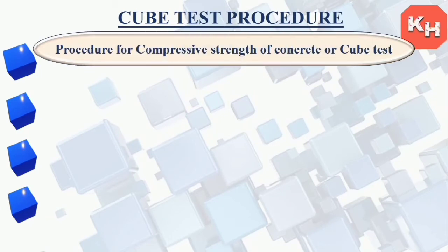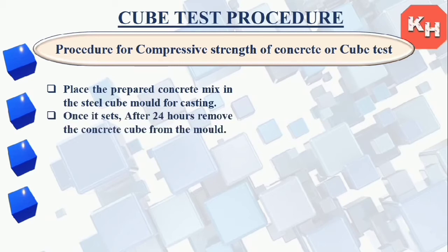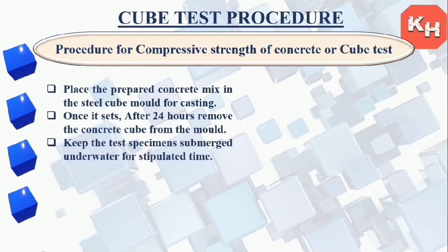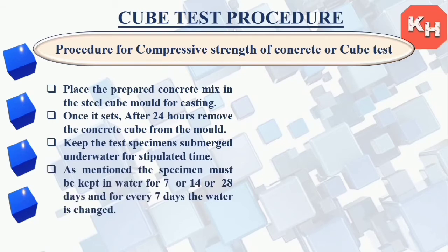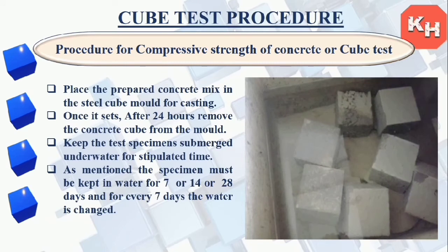Place the prepared concrete mix in the steel cube mold for casting. Once it sets after 24 hours, remove the concrete cube from the mold. Keep the test specimen submerged underwater for the stipulated curing time — 7, 14, or 28 days — and change the water every 7 days. The cubes are placed in a water tank for curing purposes.